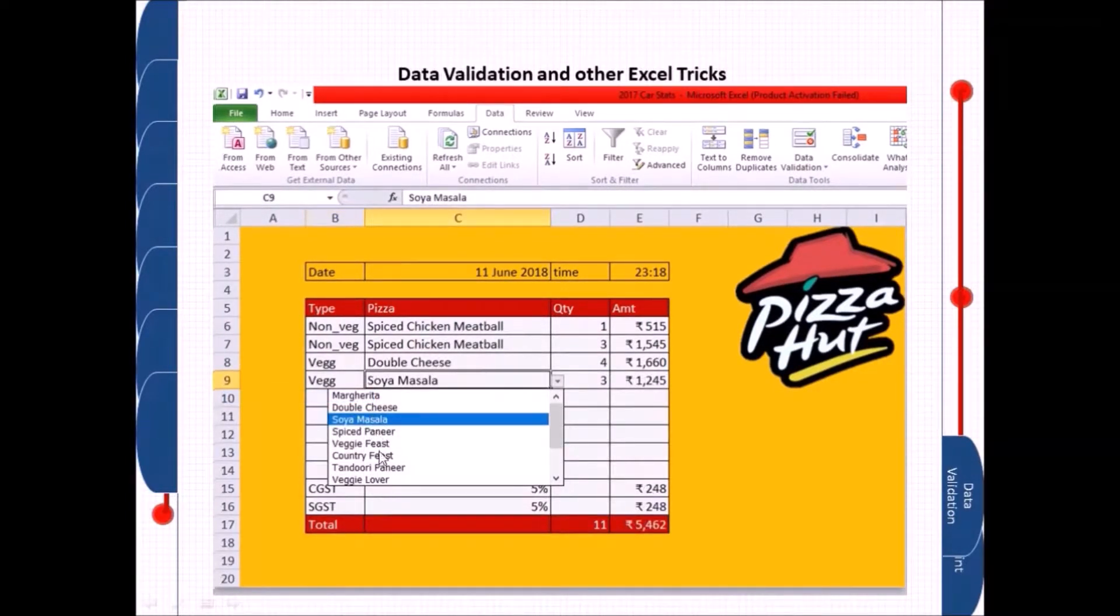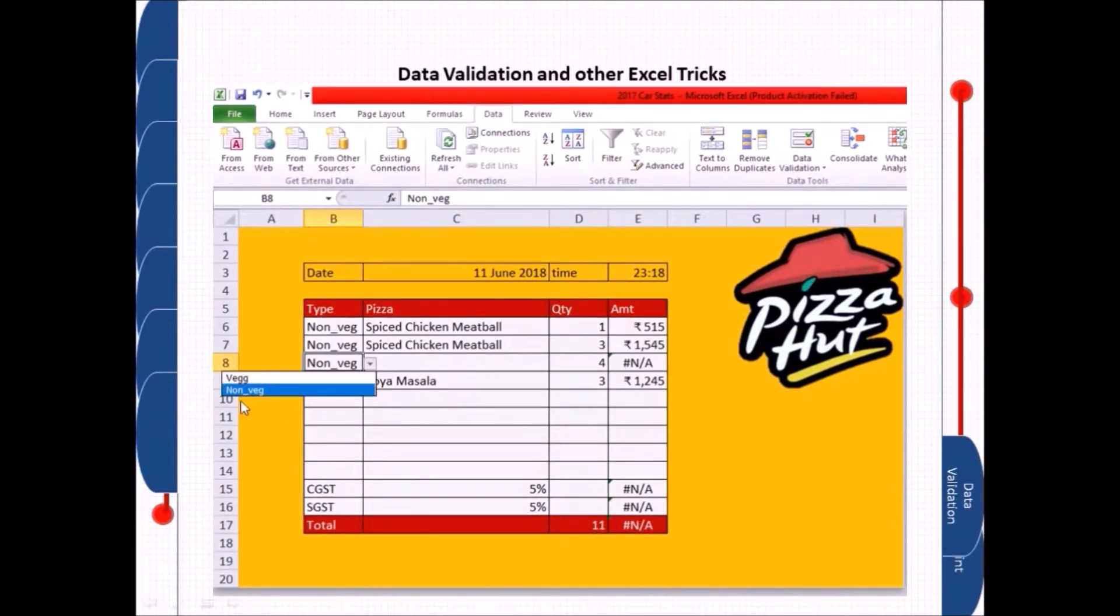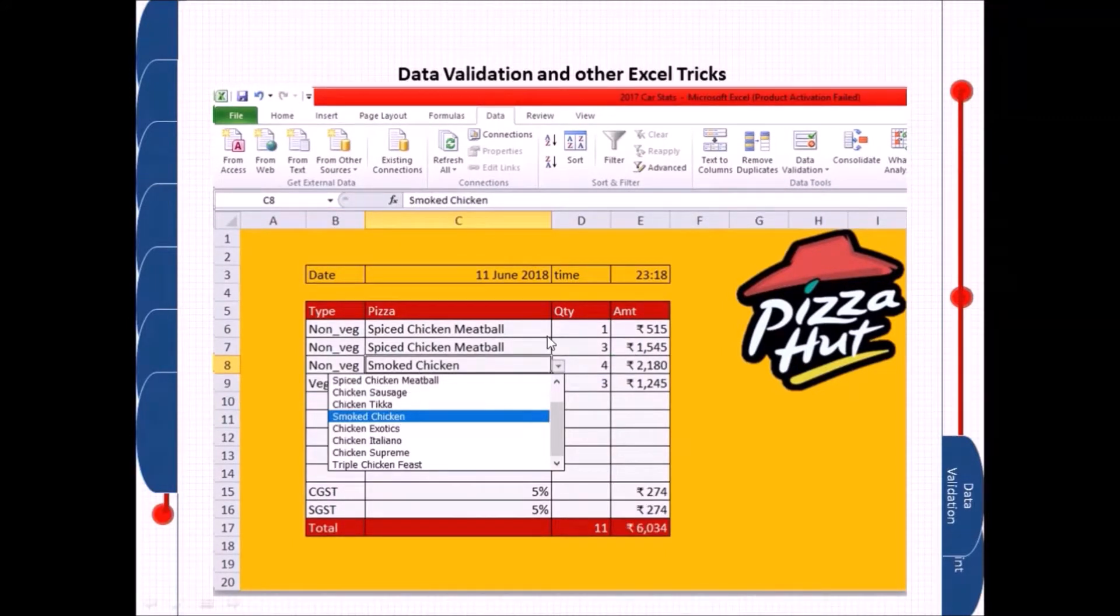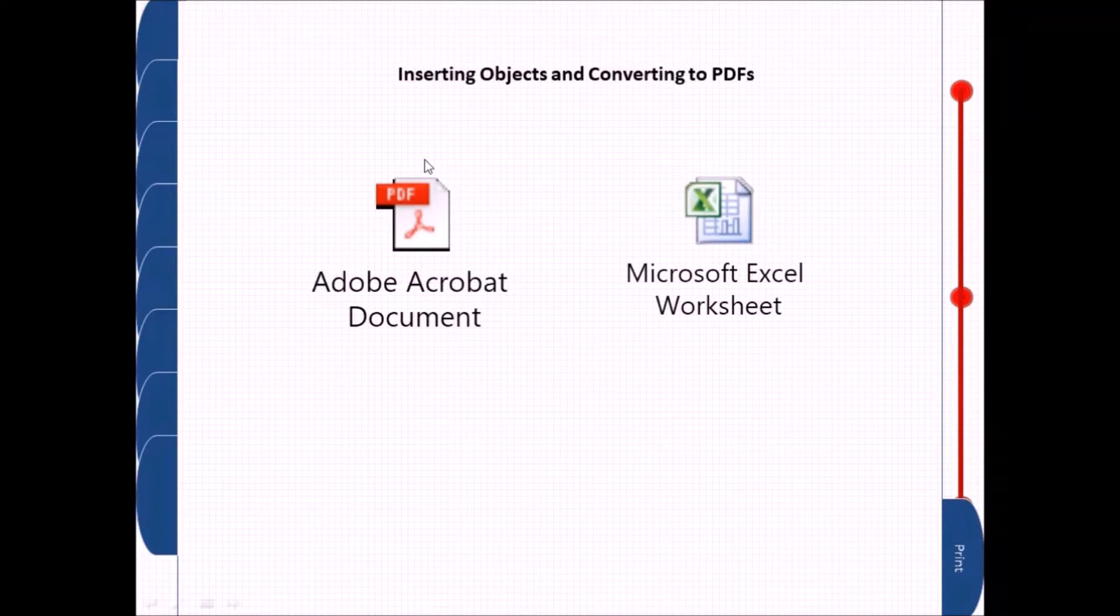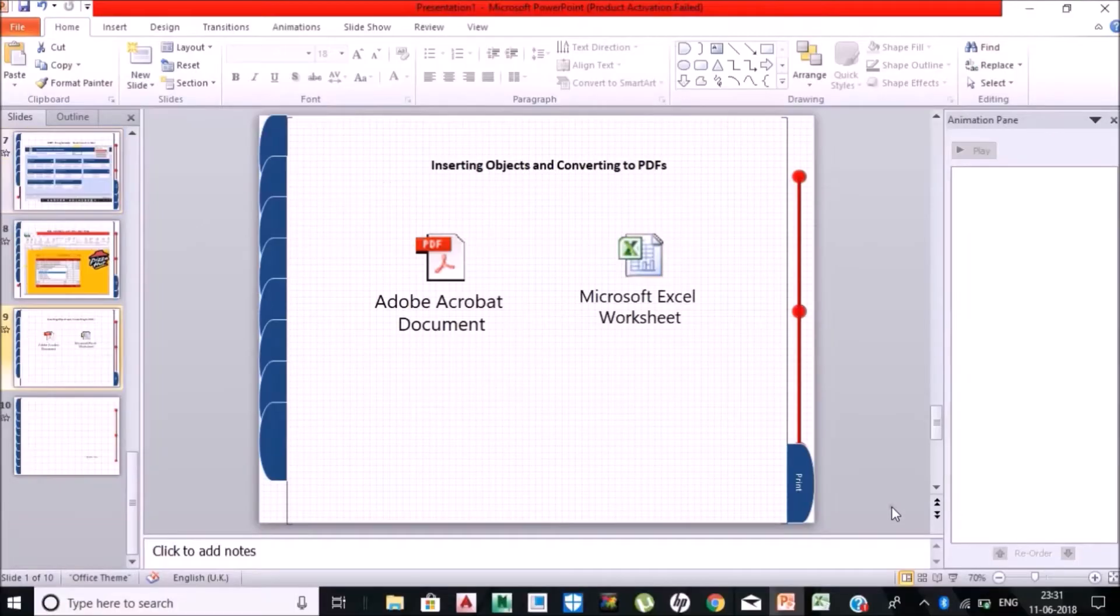Now what I will do with data validation and Excel tricks: having the veg and non-veg options on the basis of data validation tricks. Now moving forward, I have inserted object in the PDF and Excel file.